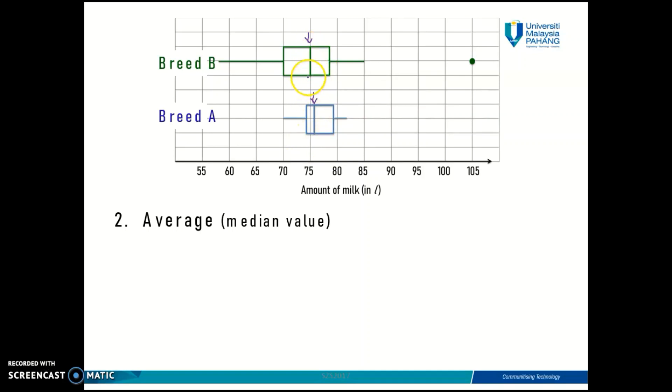But if you want to compare them precisely, you can say that Breed B produces less milk than Breed A. On average, Breed B produces less milk than Breed A in a month.